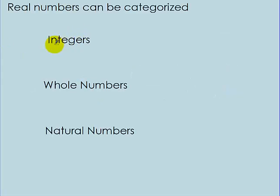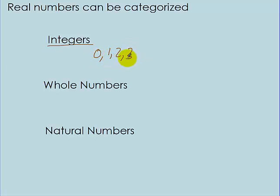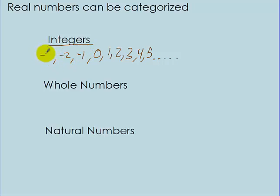Other properties of real numbers: they can be categorized. One category is integers. Integers are numbers that don't have decimals and aren't written as fractions. They can be negative, positive, or zero. For example: 0, 1, 2, 3, 4, 5, and you keep counting up to infinity. And in the negative direction: negative 1, negative 2, negative 3, and you can keep going. So those are integers.